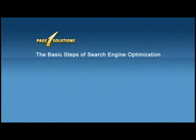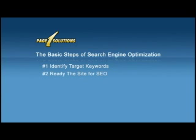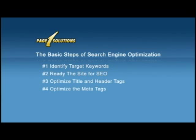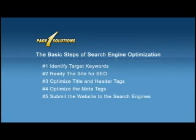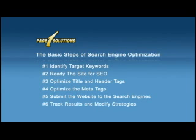So let's review. The basic steps of search engine optimization are: number one, identify target keyword phrases; number two, ready the site for SEO; number three, optimize the title and header tags; number four, optimize the meta tags; number five, submit the site to the search engines; and six, track results and modify strategies.